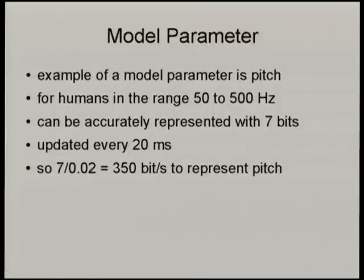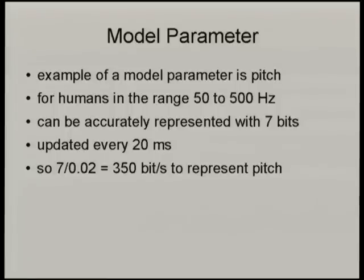An example of a model parameter is the pitch of the human voice, which ranges between about 50 and 500 Hz. A deep baritone male speaker will talk around 50 Hz, and a young child would have a pitch around 500 Hz. Pitch is time-varying — as I'm talking it goes up and down as I articulate words and syllables, but it varies within a certain range. You can accurately represent pitch with about 7 bits of information, chopping the 50 to 500 Hz range into small intervals. Transmitting that every 20 milliseconds works out to around 350 bits per second just to represent pitch. Depending on your speech model there are other parameters too, but that's one example of a model parameter.